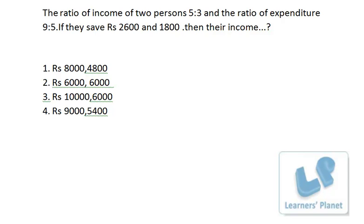I am solving a query sent by a student. The problem is based on ratio and proportion — a very simple problem where you don't require paper and pen. Just listen carefully: the ratio of income of two persons is 5:3, the ratio of expenditure is 9:5, and if they save rupees 2600 and 1800, then find their income.